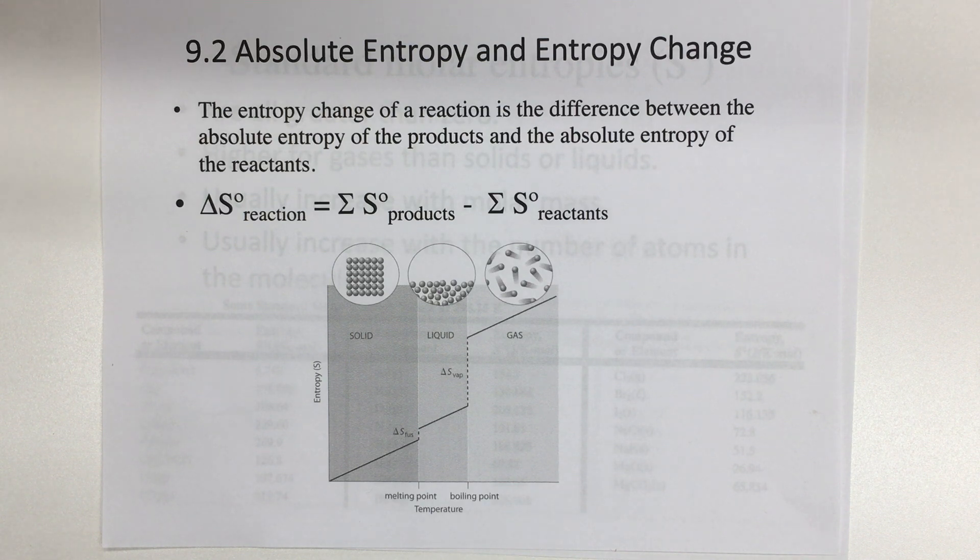In our last video, we learned what entropy is. Entropy is disorder or randomness in a system, and we learned how to predict the sign of an entropy change during a chemical reaction. So if you look at the reactants and the products, we were able to predict would delta S be positive or negative, would it become more ordered or more disordered. And in this section, we're going to learn how to calculate an actual numerical value for delta S.